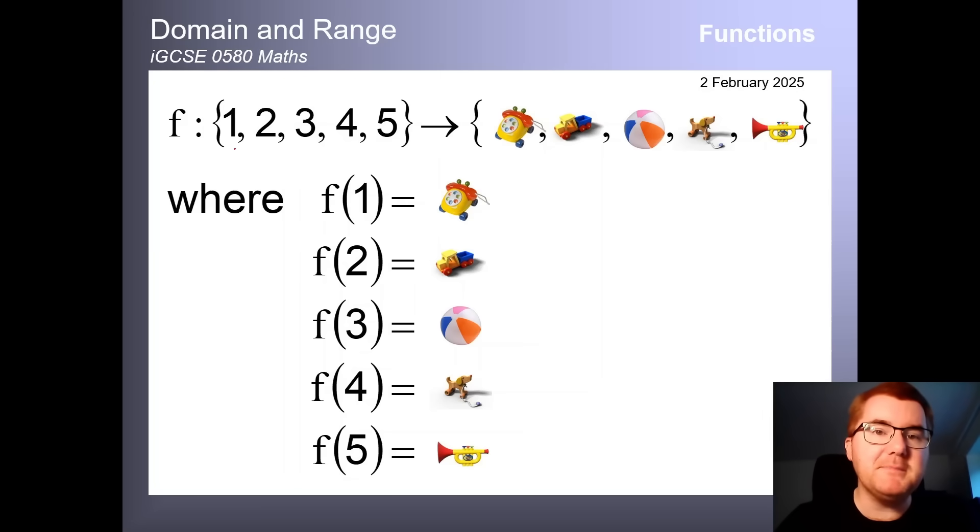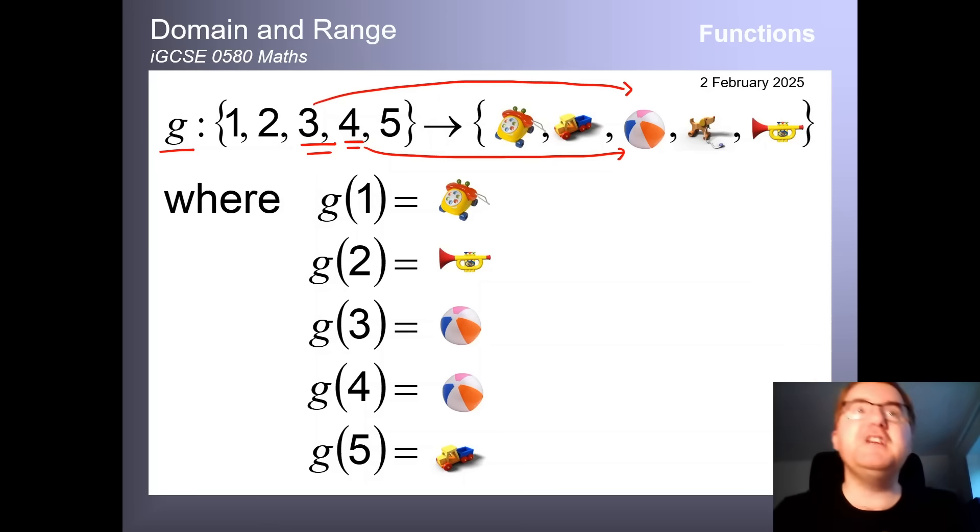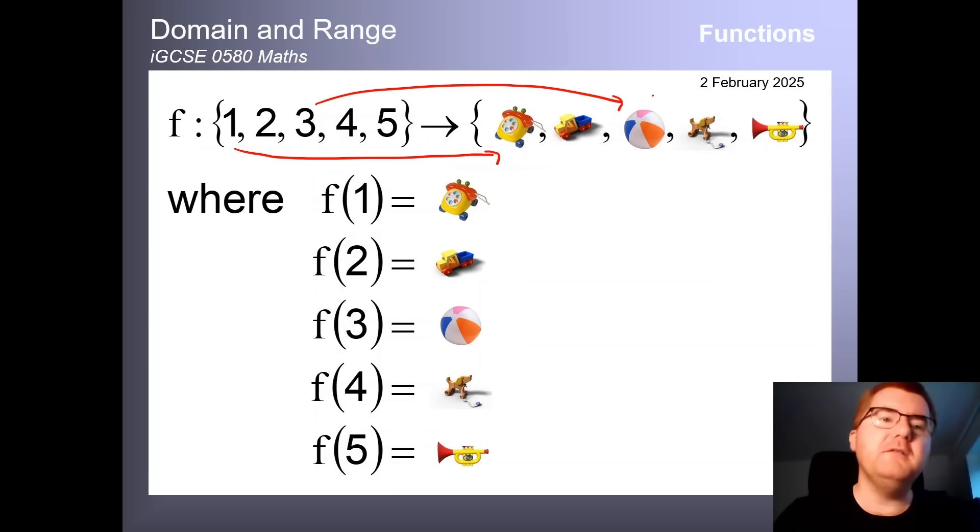Essentially what a function is, is we take these set of numbers 1, 2, 3, 4, 5, and then we match it up to one or two of the different toys that we have. So for example, one gets mapped to the toy phone. Three, for example, gets mapped over to the beach ball. And notice there is a one-on-one relation, so that means for every one number here, we have one thing over here. And that's essentially what a function is. Notice we've got three and four here. They both map to the beach ball. So you can have functions where two things map onto one thing over here.